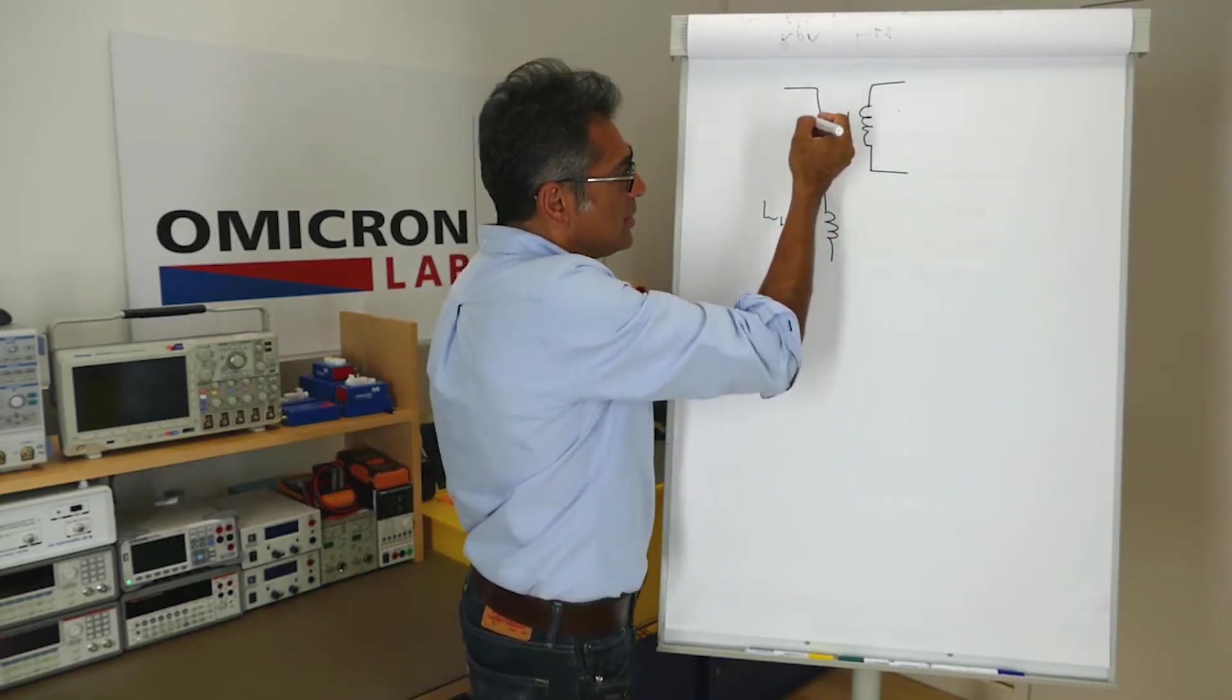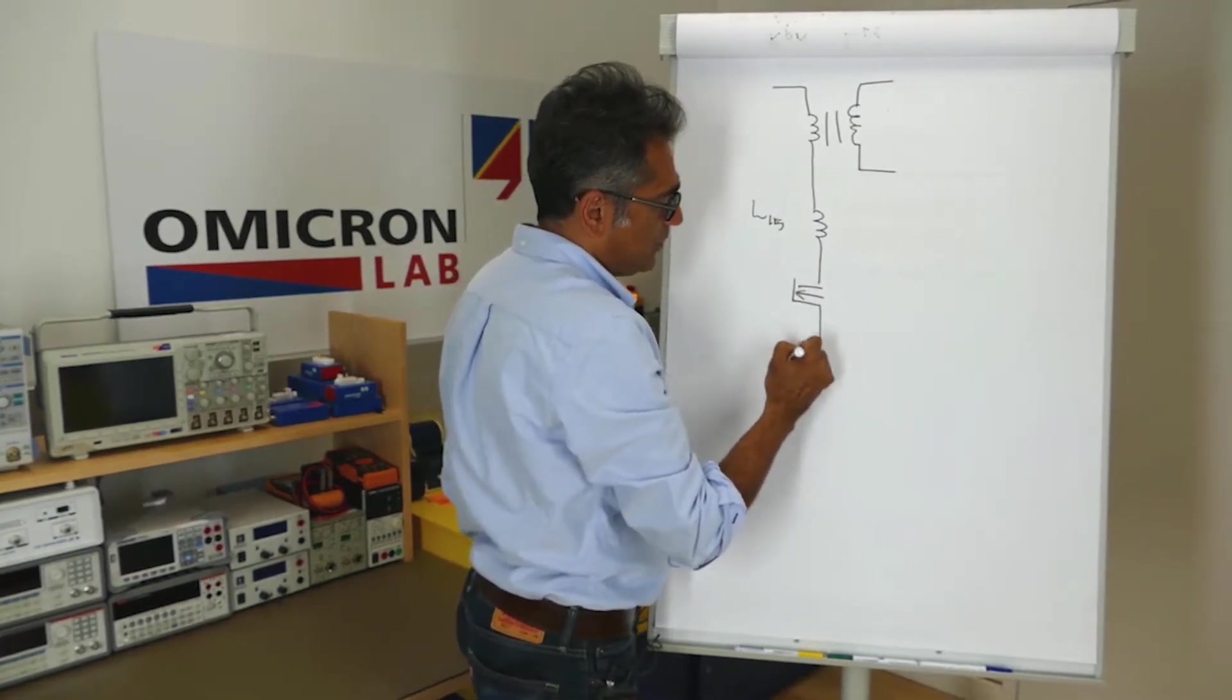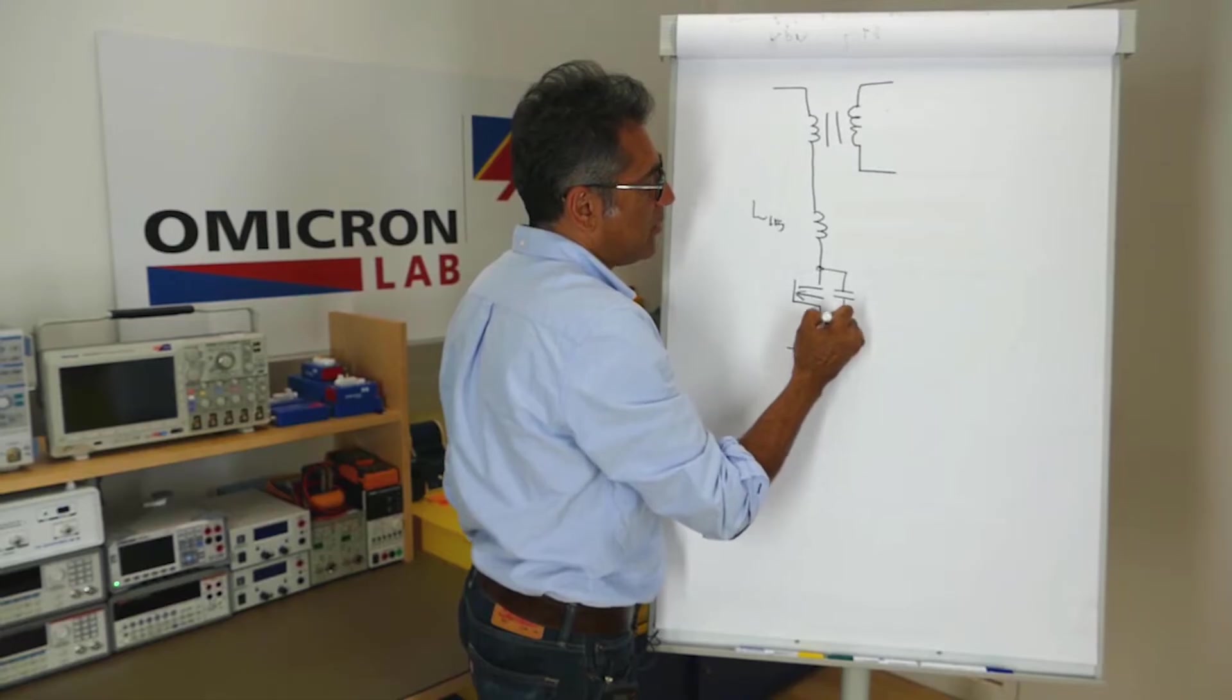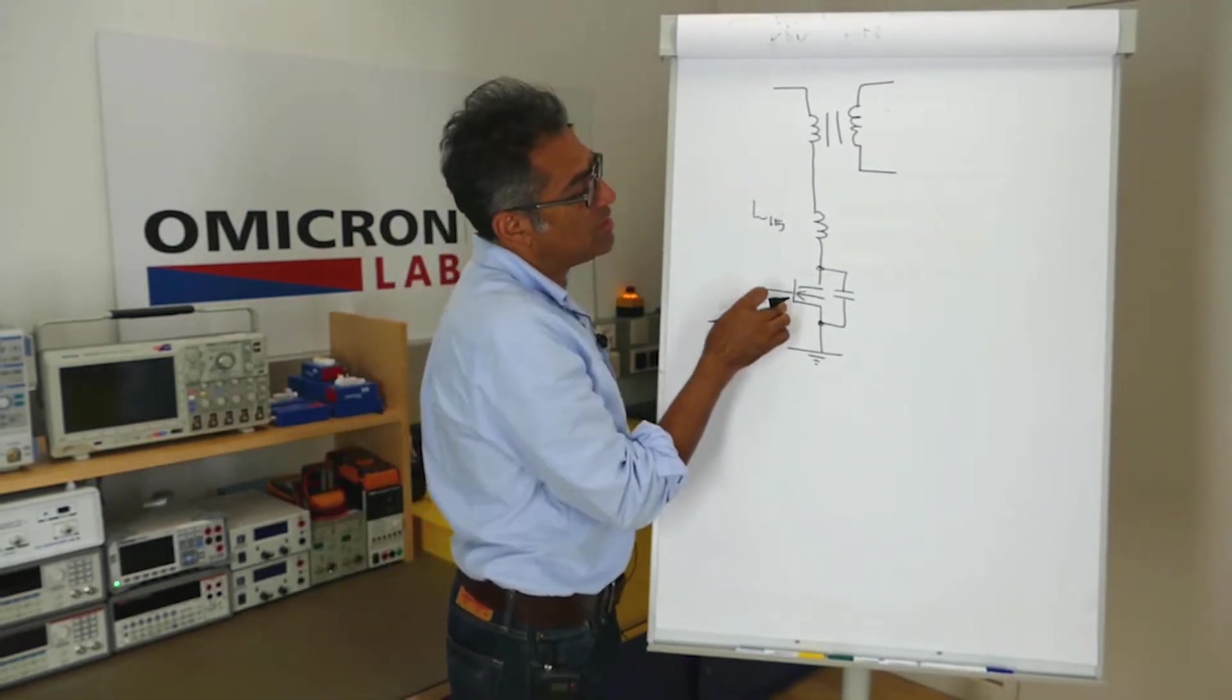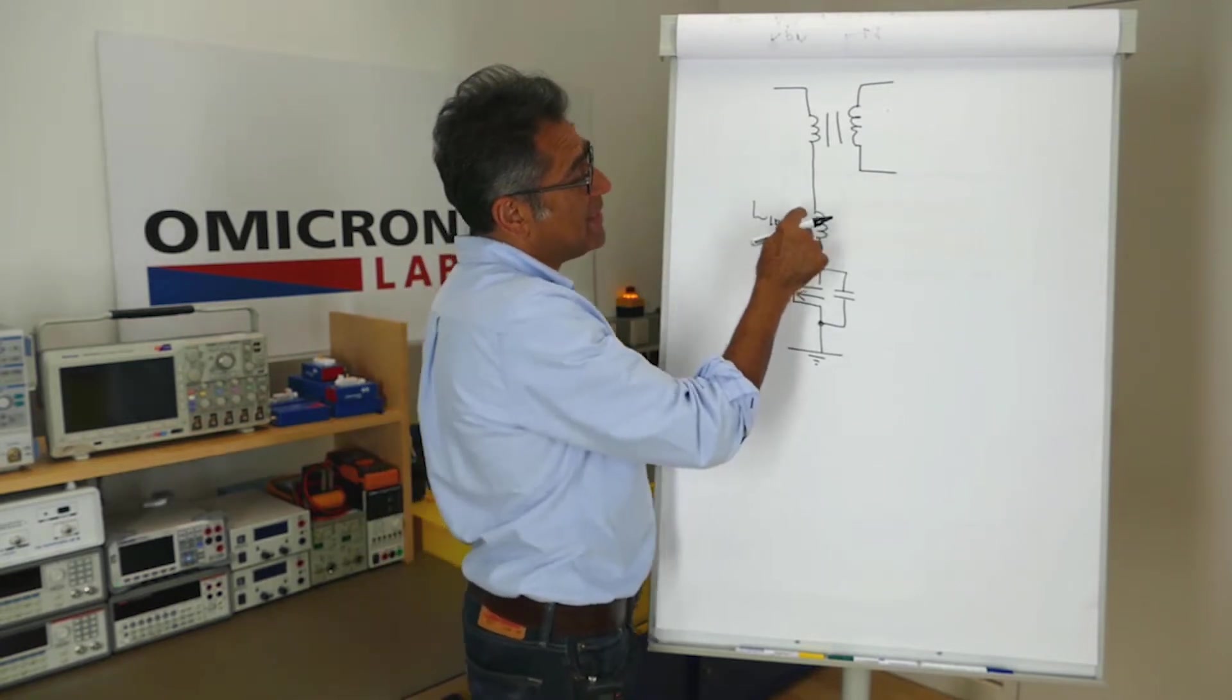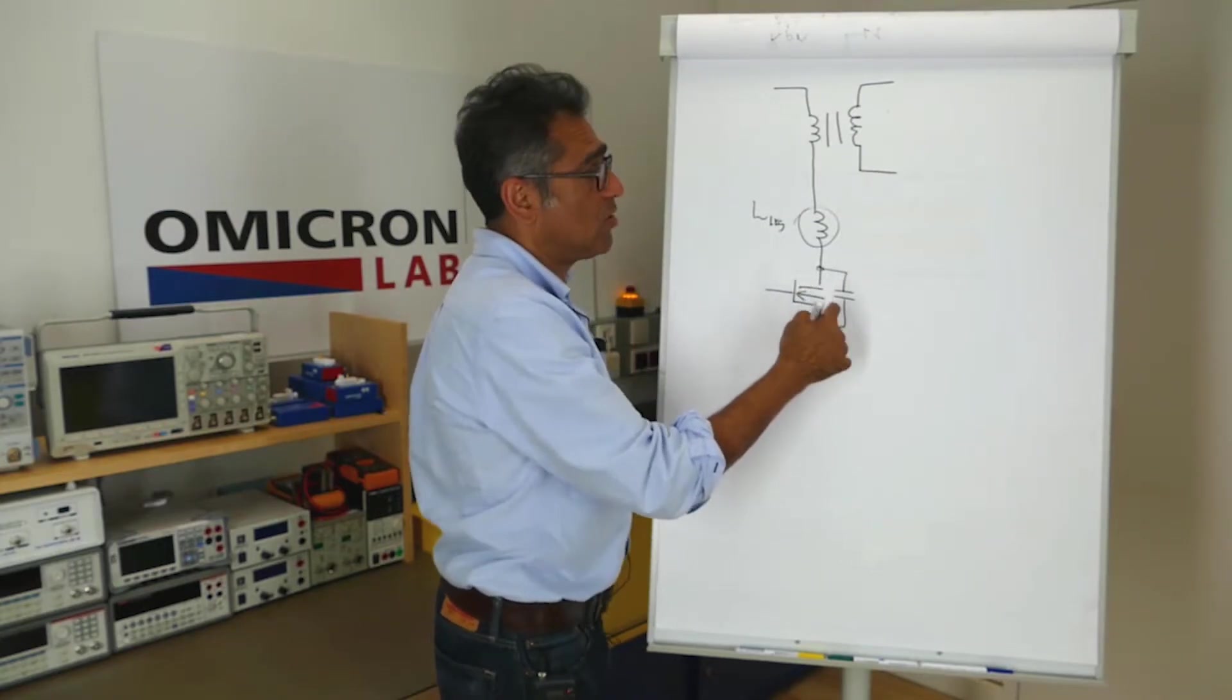Now, typically on a flyback, the primary side is connected to a switch and the switch has a certain amount of parasitic capacitance sitting right there. The problem is that you're turning this switch on and off very, very fast. And of course, what will happen is that this leakage inductance will start ringing with that capacitor that you've got.